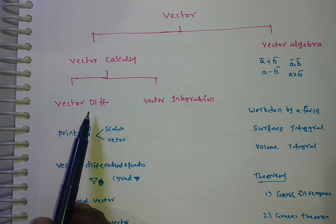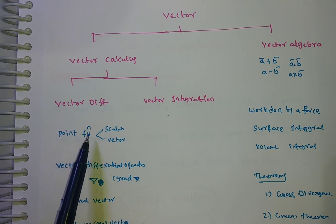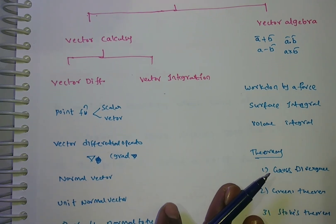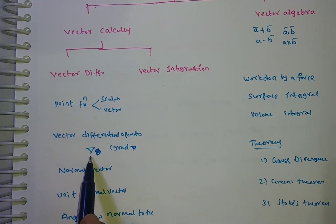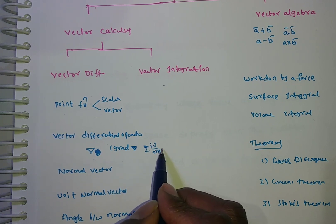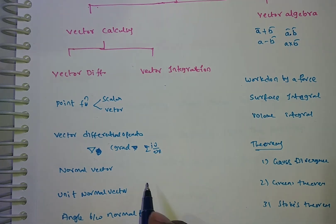Vector differentiation means we will do the differentiation of the vector point function. These point functions are two types: one is scalar point function and vector point function. We have a differential operator called del. Del is equal to i·(∂/∂x) + j·(∂/∂y) + k·(∂/∂z). That is called the vector differential operator.